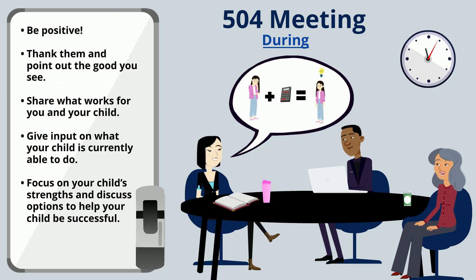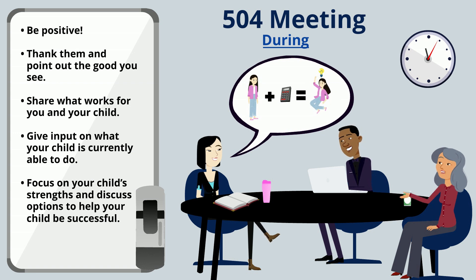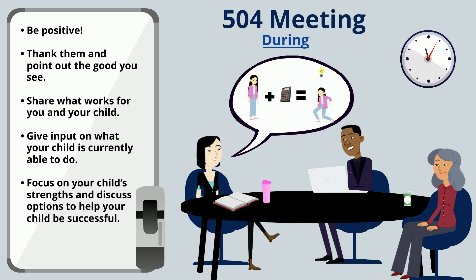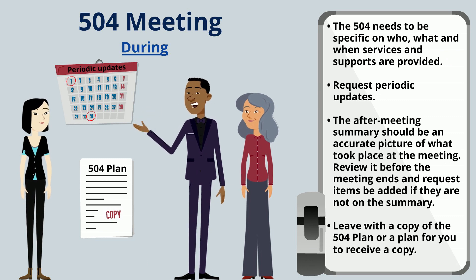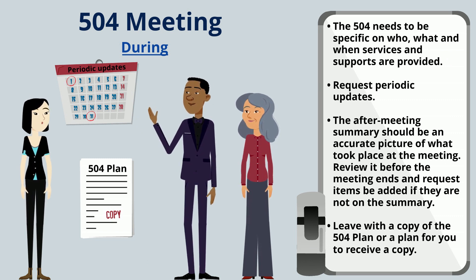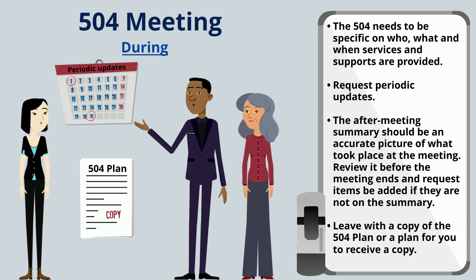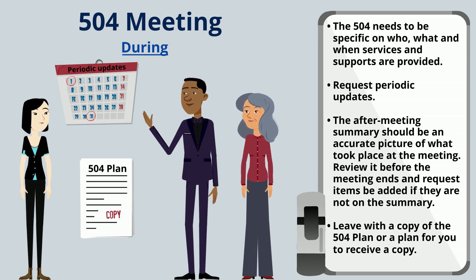During the 504 meeting, be positive. Thank them and point out the good you see. Share what works for you and your child. Give input on what your child is currently able to do. Focus on your child's strengths and discuss options to help your child be successful. The 504 plan needs to be specific on who, what, and when services and supports are provided. Request periodic updates. The after-meeting summary should be an accurate picture of what took place. Review it before the meeting ends and request items be added if they are not on the summary. Leave with a copy of the 504 plan or make a plan for you to receive a copy.